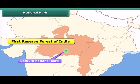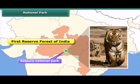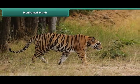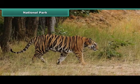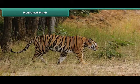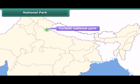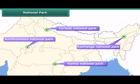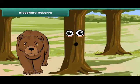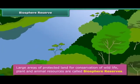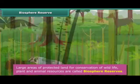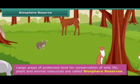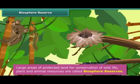The Satpura National Park is the first reserve forest of India and is famous for its tiger reserve. Project Tiger was launched by the government to protect tigers in the country. The objective of this project was to ensure the survival and maintenance of the tiger population. Apart from Satpura, Corbett, Kaziranga, Kanha, and Ranthambur are other national parks for conservation of animals. Large areas of protected land for conservation of wildlife, plant, and animal resources, and traditional life of the tribals living in the area are called biosphere reserves.